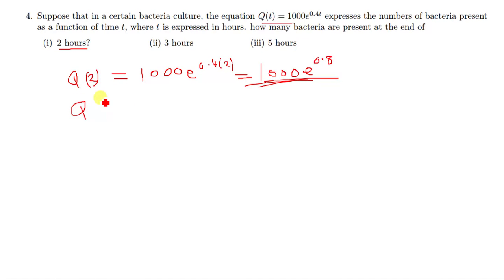Same applies to the second part. You just find Q of three. So Q of three would also be 1000 e raised to the power 0.4 times three, which gives you 1.2. So it's going to be 1000 e raised to power 1.2.